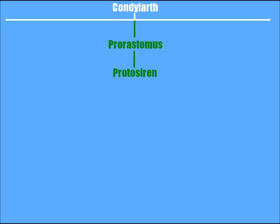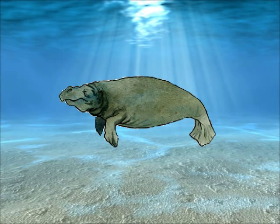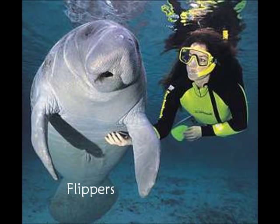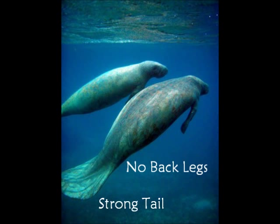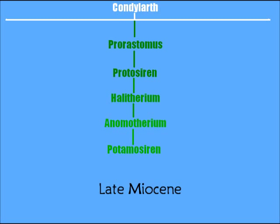Prorastomus evolved into the Protosiren at the end of the Eocene. It was a Cyrenian with relatively modern anatomy but still possessed primitive teeth. By the end of the Eocene epoch, Cyrenians were fully aquatic with flippers as front legs, no back legs, and a strong tail for swimming. Following the Protosiren, the Halotherium evolved.